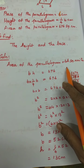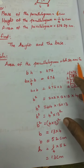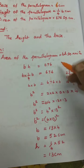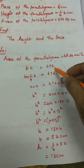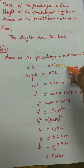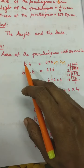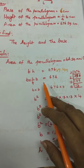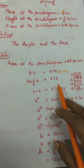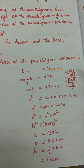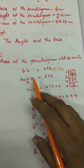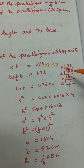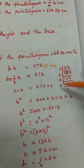Area = B × H = 676 sq cm. Substituting: b × (1/4)b = 676, so b²/4 = 676, therefore b² = 676 × 4 = 2704. By prime factorisation: 676 = 2 × 2 × 13 × 13.